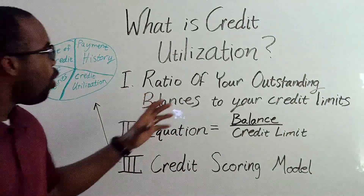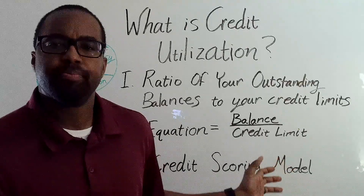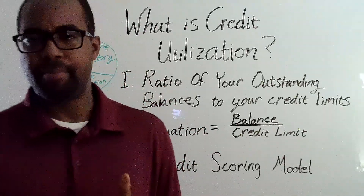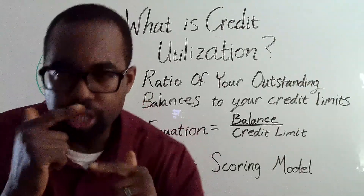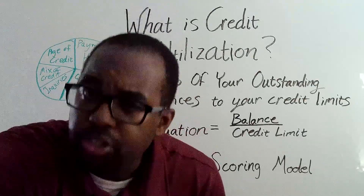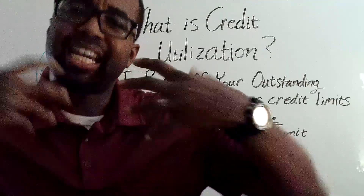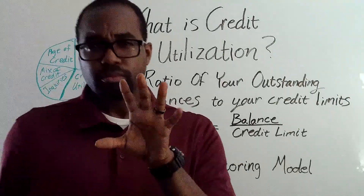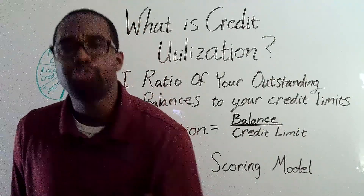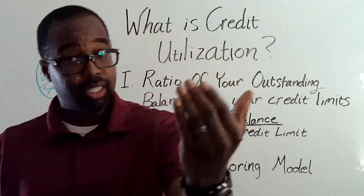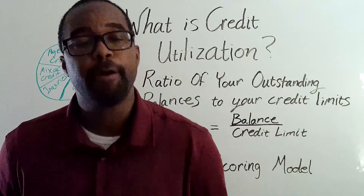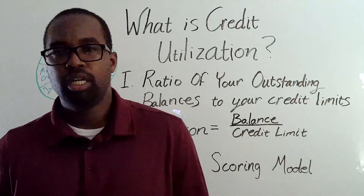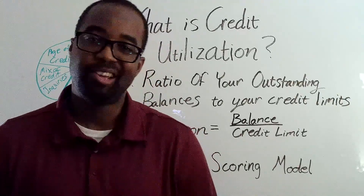Absolutely, it's 30%. And how I got that is I did an equation. That equation is: you take your balance and divide it by your credit limit. I took the $300 and divided it by the $1,000, which was our credit limit, and came out with 30%. If you're doing this at home without a calculator, $300 divided by $1,000 — balance divided by credit limit — you're going to come out with a decimal number, 0.3. Then multiply that by 100 and you get 30%.